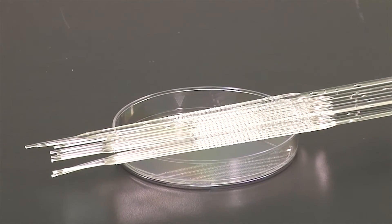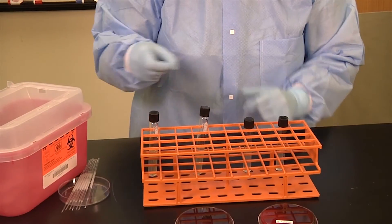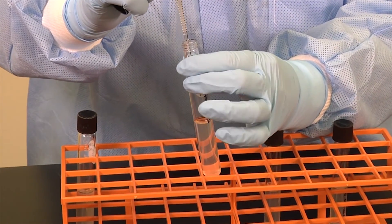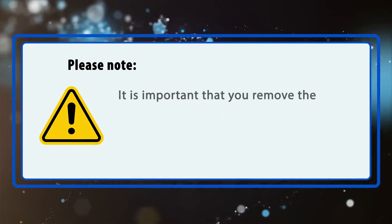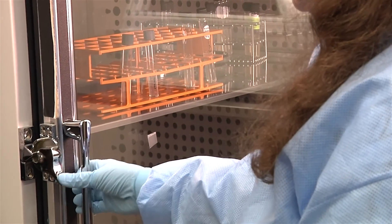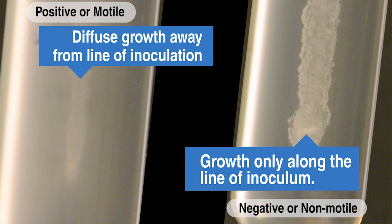With a sterile inoculating needle — do not use a loop, as it is too wide and will make results difficult to interpret — pick an isolated colony and stab the labeled tube medium straight down through the center to a depth of one half inch from the bottom of the tube. Do not go all the way to the bottom, as this prevents the organism from growing up the sides. Remove the needle along the same path used to enter the media, then discard it in the sharps container. Incubate at 35 degrees Celsius for 18 to 24 hours. A positive test in motility media without TTC is diffuse growth away from the inoculation site or turbidity of the media. A negative test shows only growth along the line of inoculum with clear media around it. Note that some organisms will grow better at the top of the tube where there is more oxygen.